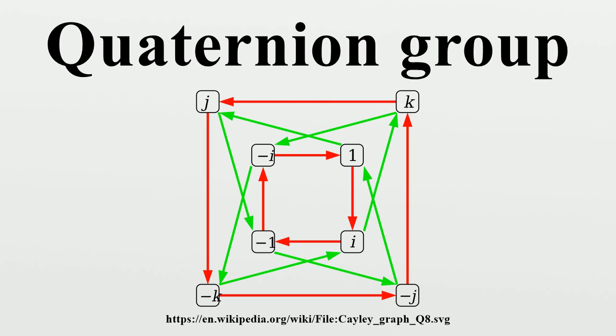Matrix representations. The quaternion group can be represented as a subgroup of the general linear group GL2(C). A representation is given by matrices, and since all of the above matrices have unit determinant, this is a representation of Q in the special linear group SL2(C).